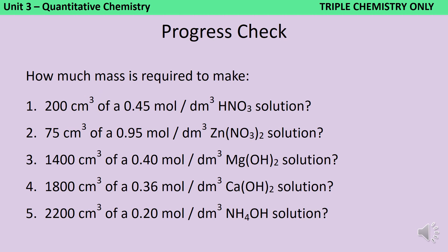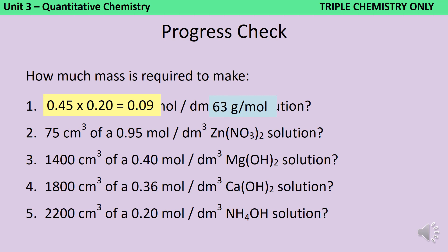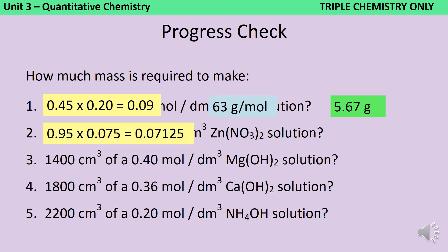Here are five questions for you to have a go at. In each case, multiply the concentration by the volume in decimetres cubed to get the number of moles, then multiply by the relative formula mass to get the final mass. For the first: 0.45 times 0.2 gives 0.09 moles; nitric acid has a relative formula mass of 63, and 63 times 0.09 is 5.67 grams. For the second: 0.95 moles per decimetre cubed multiplied by 0.075 gives 0.07125 moles; zinc nitrate has a relative formula mass of 189, so with a bit of rounding we need 13.5 grams.